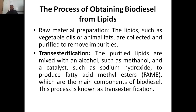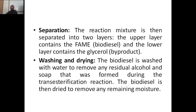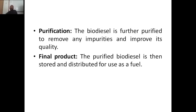For the process of obtaining biodiesel: the purified lipids are mixed with alcohol such as methanol and a catalyst such as sodium hydroxide to produce fatty acid methyl esters (FAME), which are the main components of biodiesel. Then separation — the reaction mixture is separated into two layers: the FAME upper layer, which is required for biodiesel, and the byproduct lower layer containing glycerol, which is removed. Then washing and drying — the biodiesel is washed with water to remove any residual alcohol and soap formed during transesterification, then dried to remove remaining moisture. Finally, the purified biodiesel is stored and distributed for use as fuel.